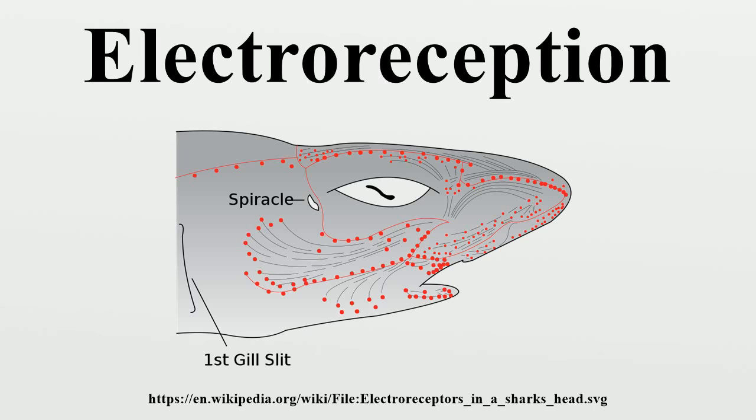In passive electrolocation, the animal senses the weak bioelectric fields generated by other animals and uses it to locate them. These electric fields are generated by all animals due to the activity of their nerves and muscles. A second source of electric fields in fish is the ion pumps associated with osmoregulation at the gill membrane.